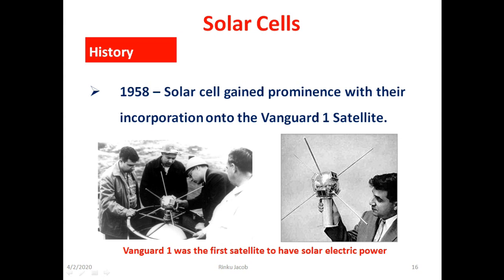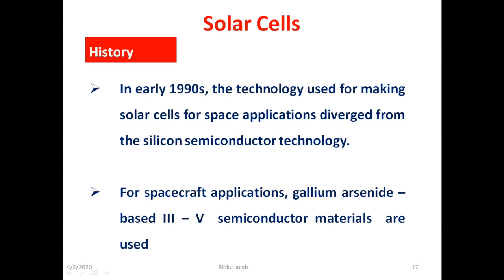From 1960 onwards solar cells became the main power source for most earth orbiting satellites and for a number of probes sent into the solar system since they offered the best power to weight ratio. In early 1990s the technology used for making solar cells for space applications diverged from the silicon technology. For spacecraft applications gallium arsenide based semiconductor materials were used which later evolved into the modern multi-junction photovoltaic cell.